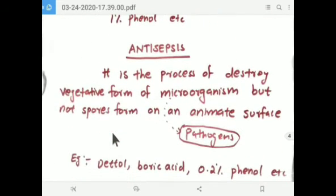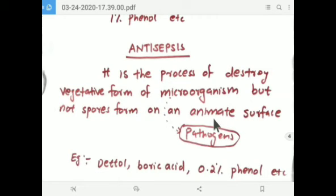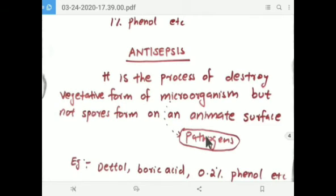Antisepsis is the process of destroying or inhibiting the growth of vegetative forms of microorganisms, but not the spore form — similar to disinfection — but on an animate surface, meaning living bodies. Antiseptics can be used on skin and wounds. They destroy or inhibit the growth of pathogens but cannot destroy the spore form.